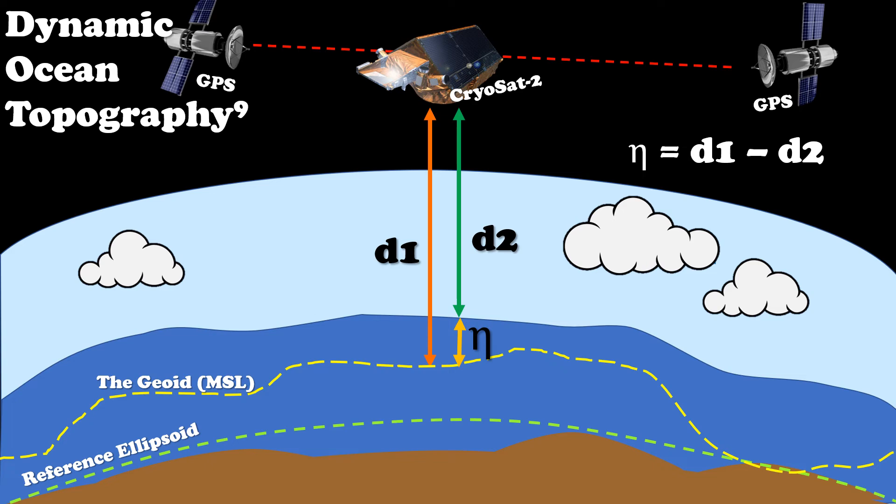Eta can be derived from the distance from the satellite to the geoid minus the distance from the satellite to the ocean surface.